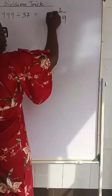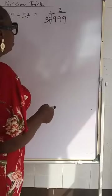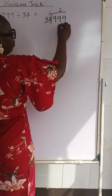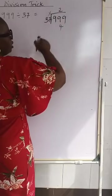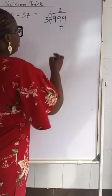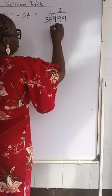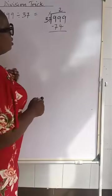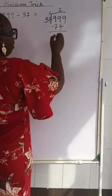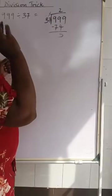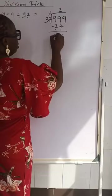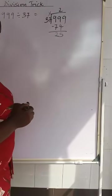We multiply 37 by 2. 2 times 7 is 14. You write your 4 here and carry your 1. 2 times 3 is 6, plus the 1 we carry is 7. You write it like this and you take away. 9 take away 4 is 5. 9 take away 7 is 2. So our answer there is 25.